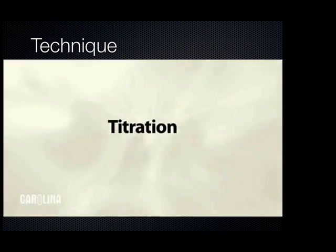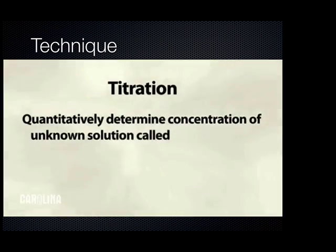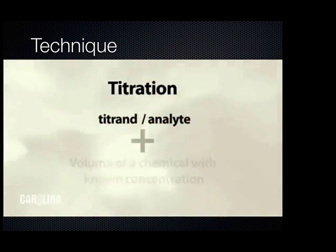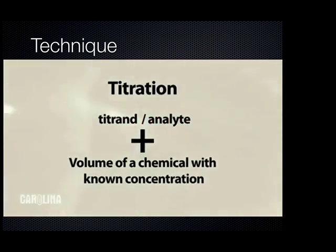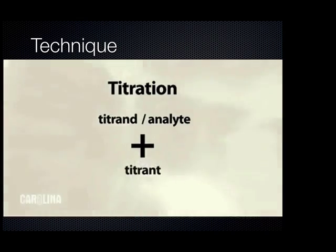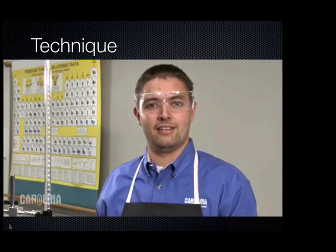The purpose of a titration is to quantitatively determine the concentration of an unknown solution, commonly called the titrand or analyte, by adding a volume of a chemical with a known concentration called the titrant. To mark the endpoint of a titration, an indicator is added to the analyte.